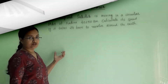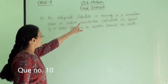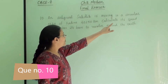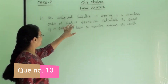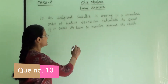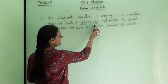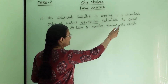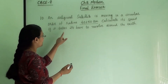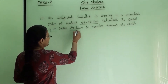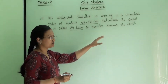Second question. An artificial satellite is moving in a circular orbit of radius 42,250 km. Calculate its speed if it takes 24 hours to revolve around the earth.